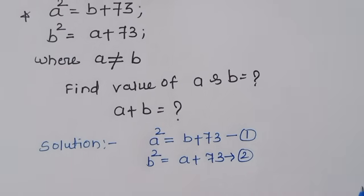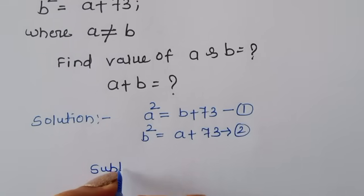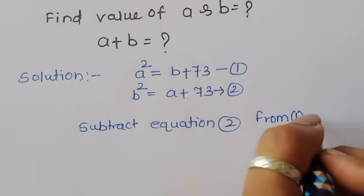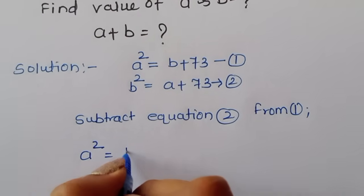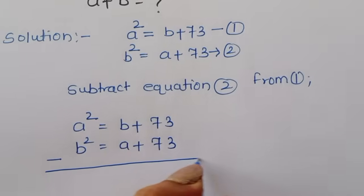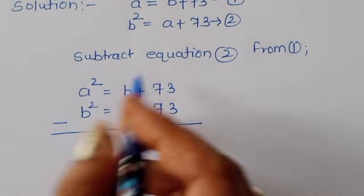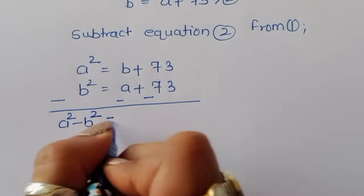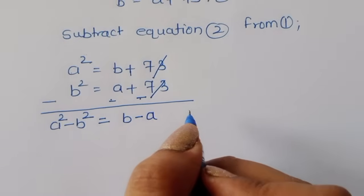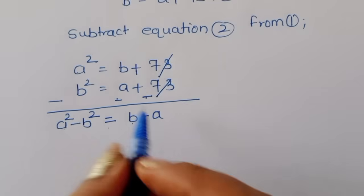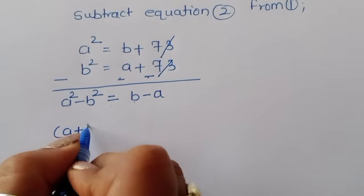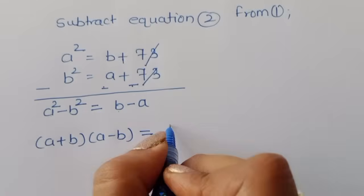Now we subtract equation two from equation one. We get a² - b² = (b + 73) - (a + 73), which simplifies to a² - b² = b - a. Using the formula a² - b² = (a + b)(a - b), we can write (a + b)(a - b) = b - a.